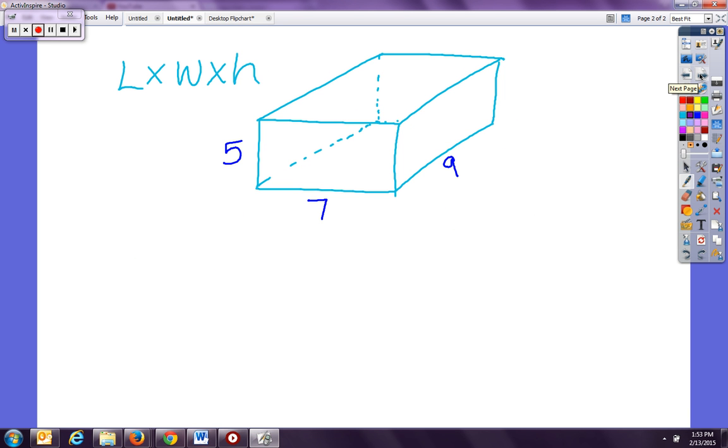This is a rectangular prism. It's a rectangle and it has been made into a three-dimensional figure, so that makes it a rectangular prism. So my formula, again we're dealing with our formulas, we have length times width times height.